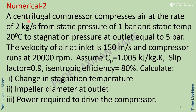Next numerical: a centrifugal compressor compresses air at the rate of 2 kg per second from static pressure of 1 bar and static temperature 20 degrees Celsius to a stagnation pressure at outlet of 5 bar. The velocity of air at inlet is 150 m/s and the compressor runs at 20,000 RPM. Assume Cp equals 1.005 kJ per kg Kelvin, slip factor equals 0.9, isentropic efficiency equals 80%. Calculate change in stagnation temperature, impeller diameter at outlet, and power required to drive the compressor.